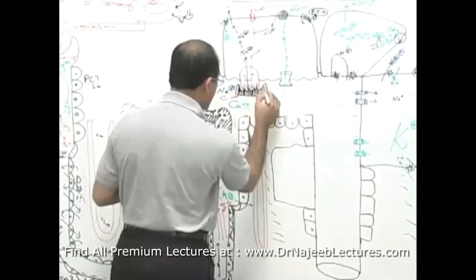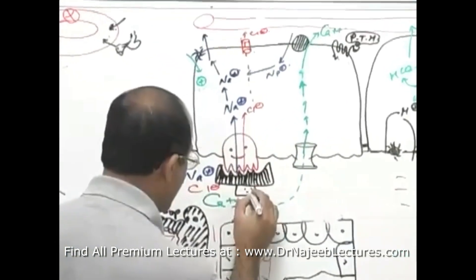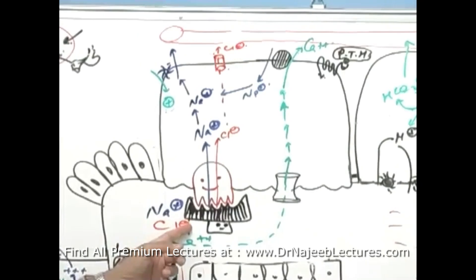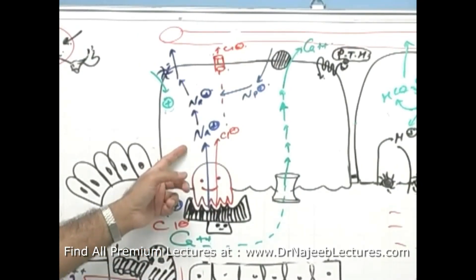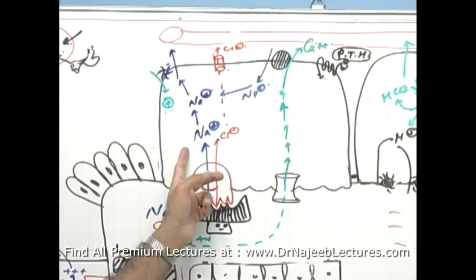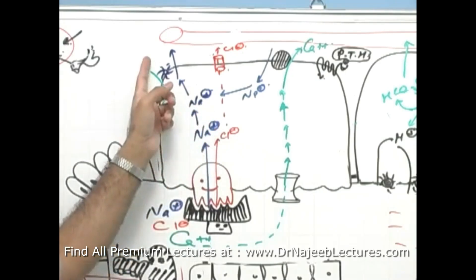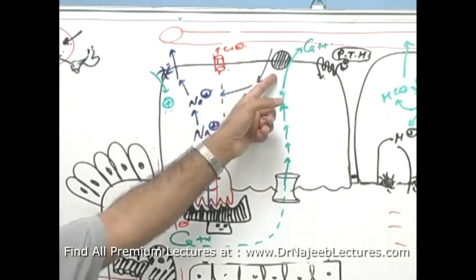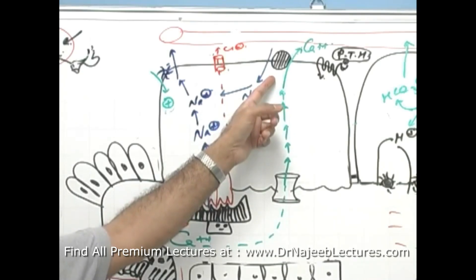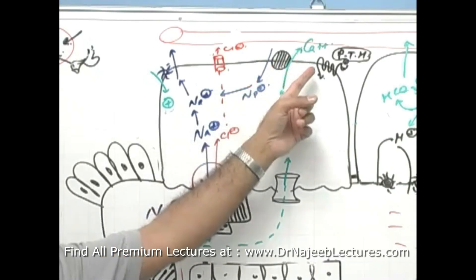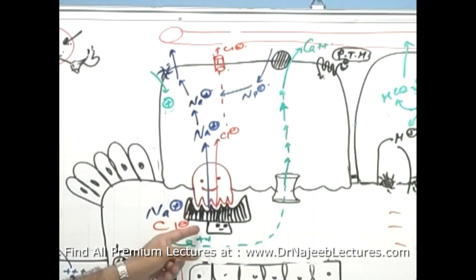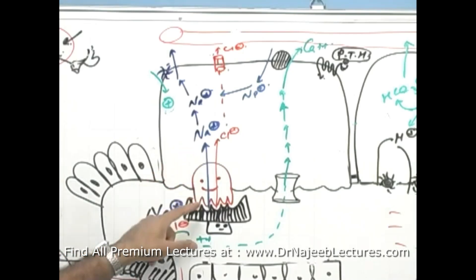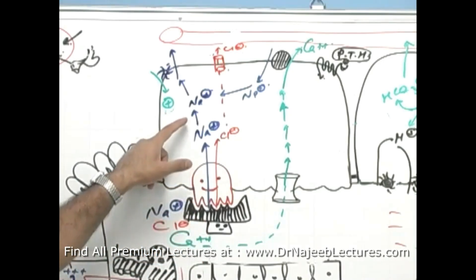Like furosemide, thiazides are also potassium-wasting diuretics. Now another important point: when thiazides are applied, the cell is not getting sodium from the luminal side because the sodium-chloride symport is blocked. Normally, cells get sodium from the luminal side via sodium-chloride entry, and also from the basolateral side in exchange for calcium being expelled to the interstitium.